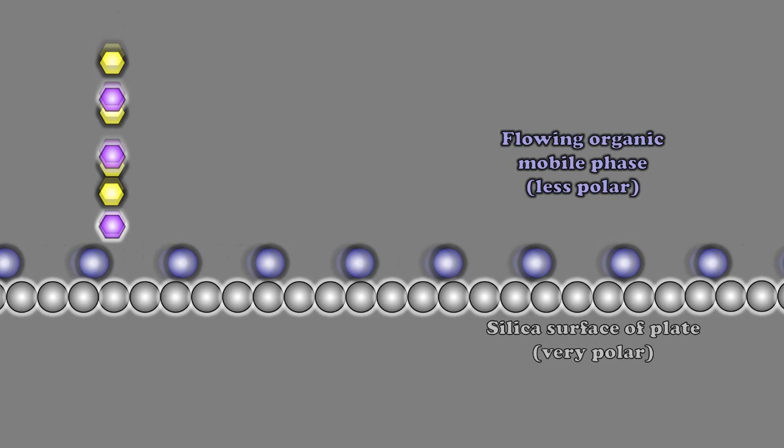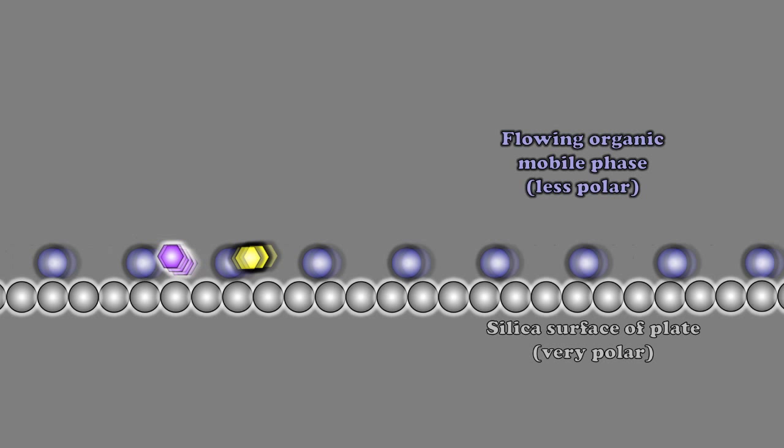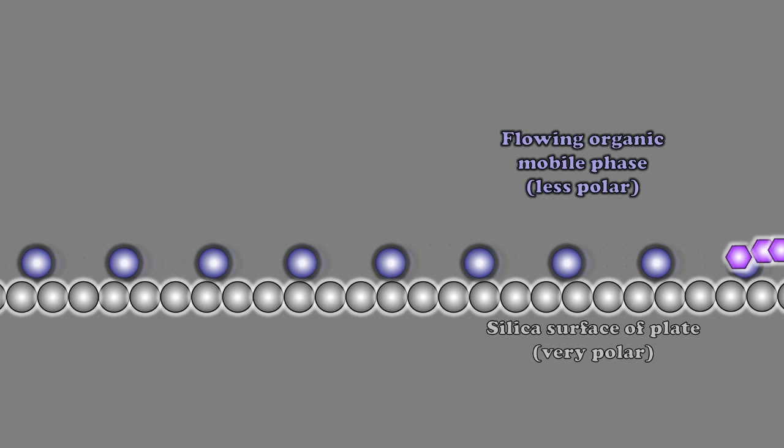So now let's add a mixture of both to the same point on that plate. And again, release it and let nature take its course. What do we expect to see happen here? Well, of course, they move at different rates and therefore they become separated in space very quickly from one another.